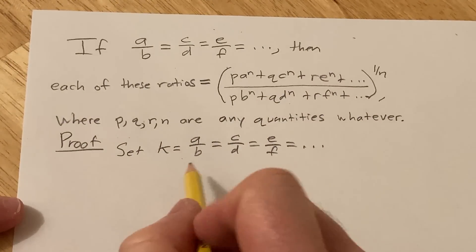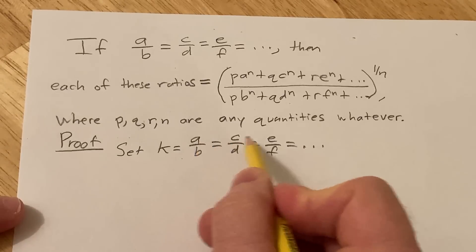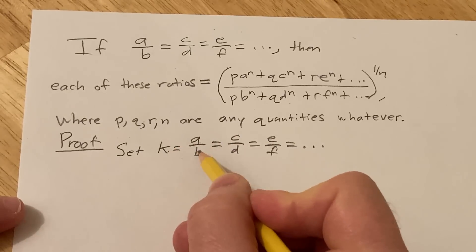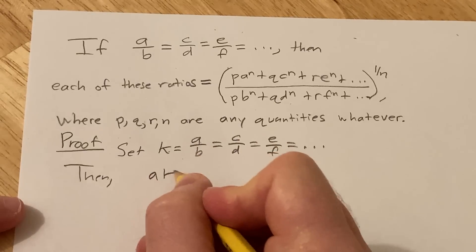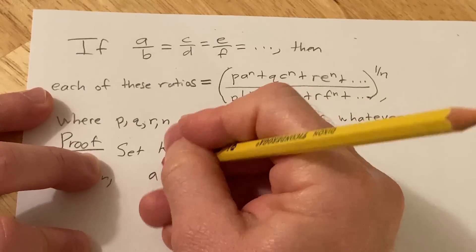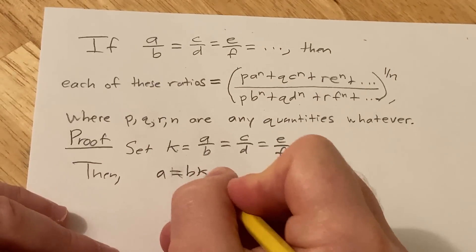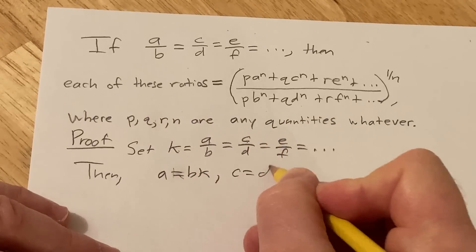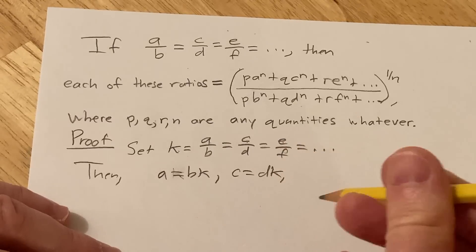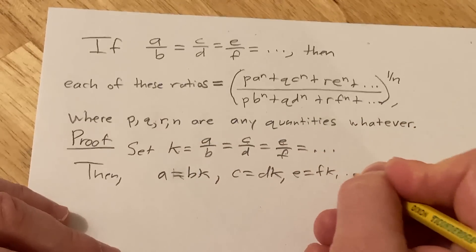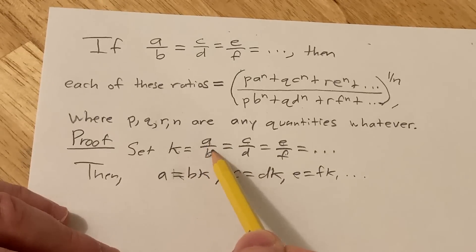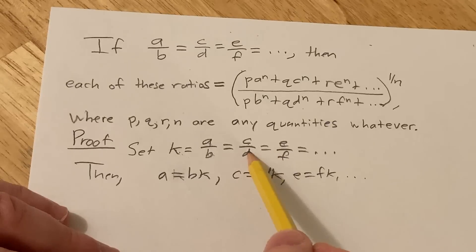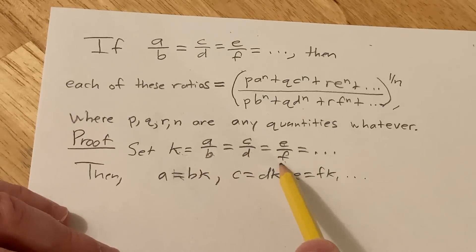Now what you can do is write each of these numerators in terms of K. For example, if K equals A over B, I can multiply by B, so that tells us A equals BK. And then C equals DK, and E equals FK, et cetera. Just multiply by B: if K equals A over B, you get A equals BK. If K equals C over D, multiply by D, you get C equals DK. If K equals E over F, multiply by F, you get E equals FK.